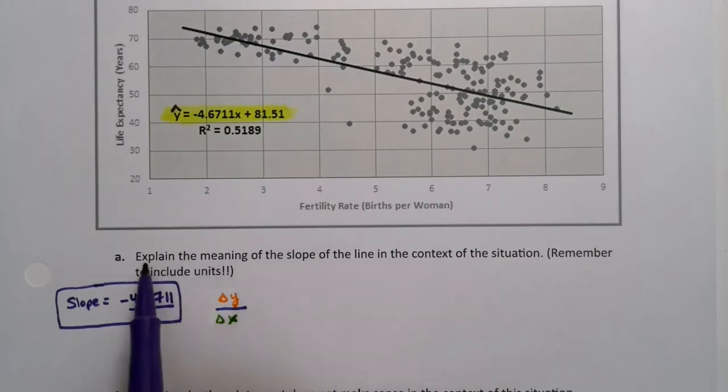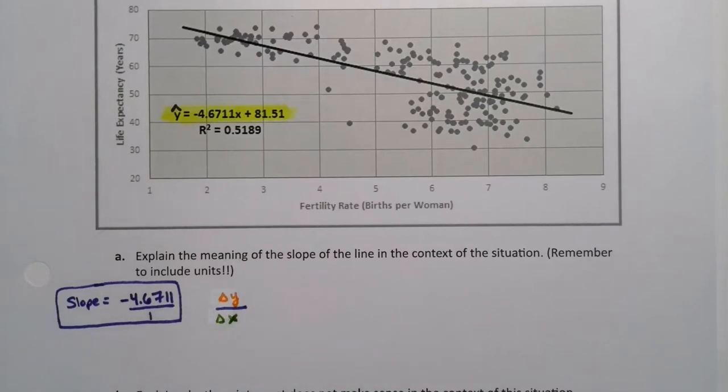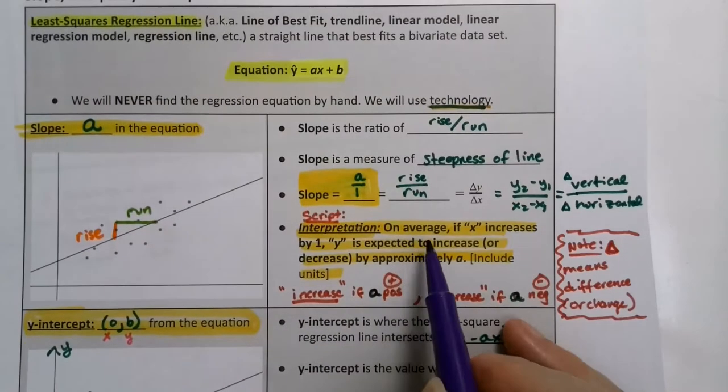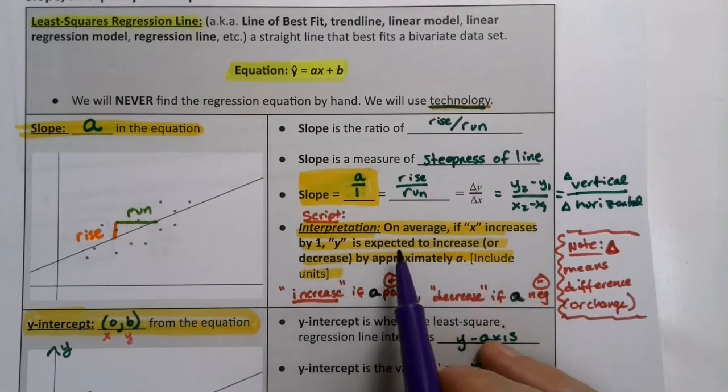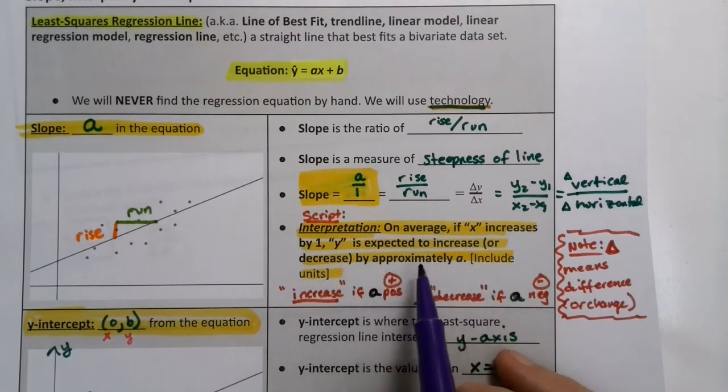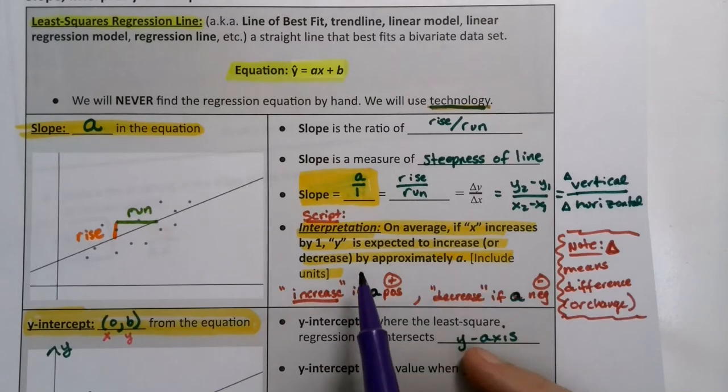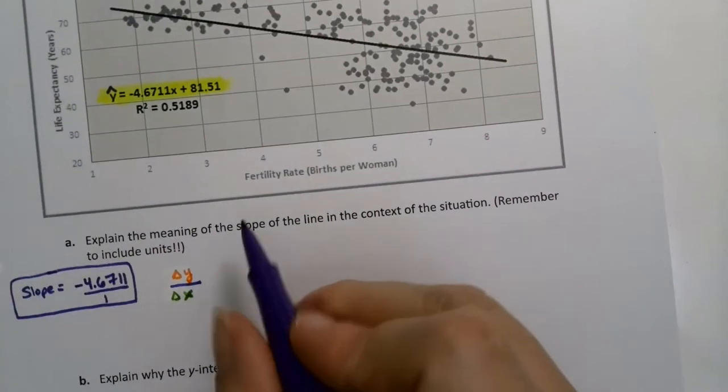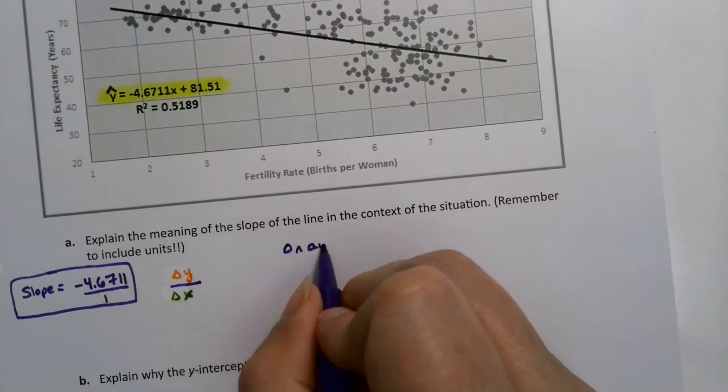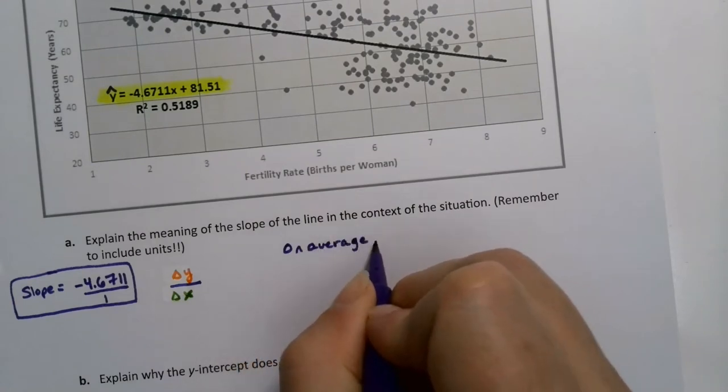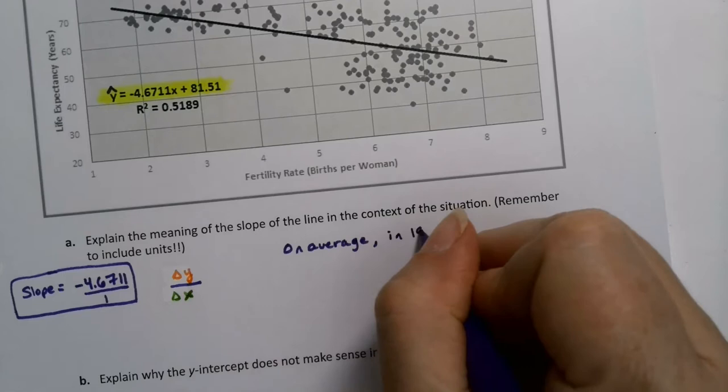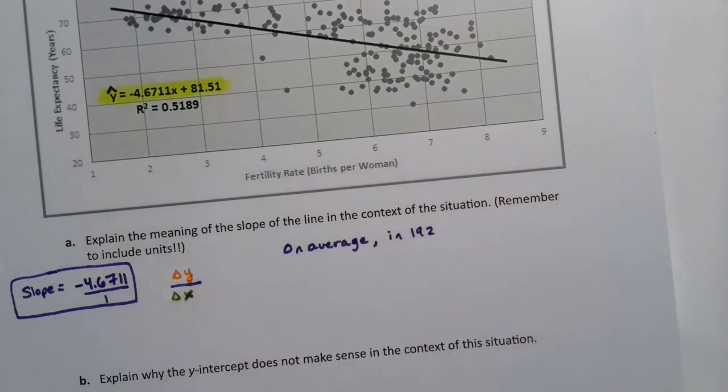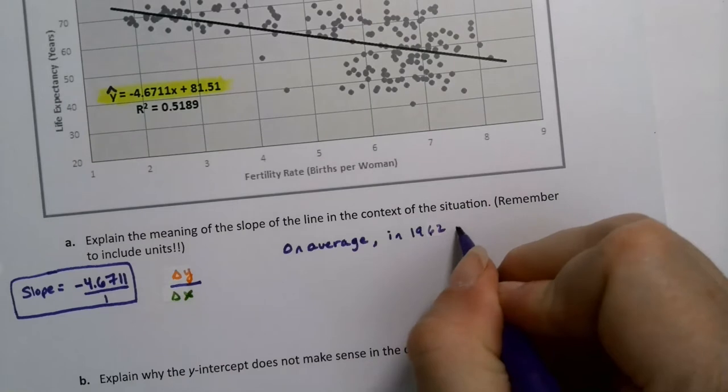Now, what does this mean? We want to explain the meaning. We want to interpret. So we have to go back to the script. On average, if x increases by 1, y is expected to increase or decrease by approximately a, include units. So we'll say, on average, in 1962, if a country, because each dot is representing a country.